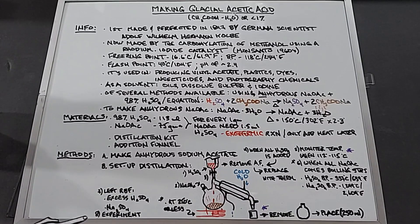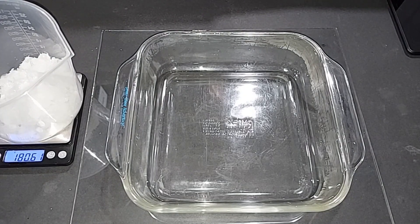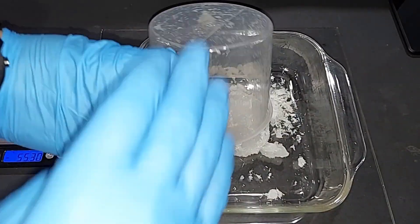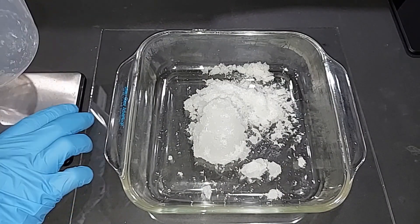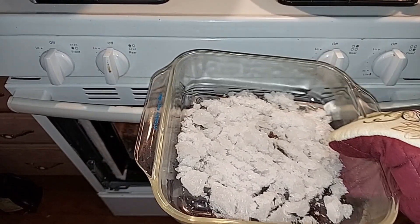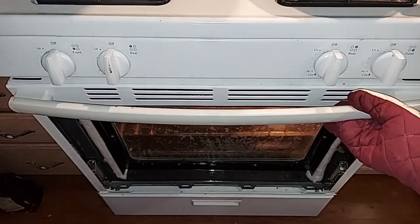I've got about 180 grams of sodium acetate trihydrate made a couple weeks ago. To make glacial acetic acid, it can no longer have any hydrate water, so I'm going to dry it out. I spread it out in a pan, chopped it up a bit, and I'm putting it in the oven at about 310°F (153°C). I'll check on it periodically.